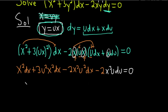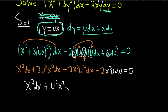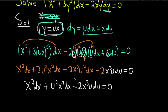Checking for cancellations: the 3u squared x squared dx minus 2x squared u squared dx simplifies to u squared x squared dx. So we have x squared dx plus u squared x squared dx minus 2x cubed u du equals zero. Once you make this substitution, the differential equation becomes separable — you can get all the x's on one side with dx and all the u's on one side with du.